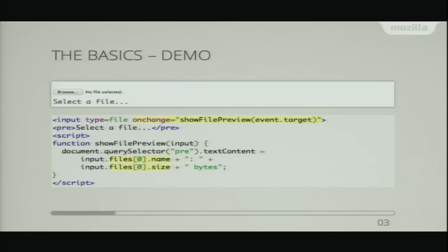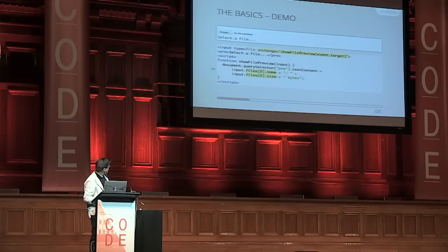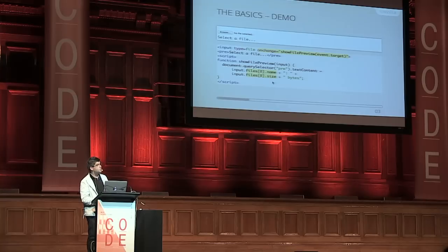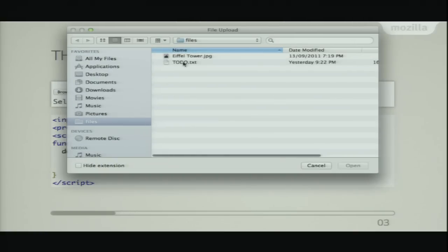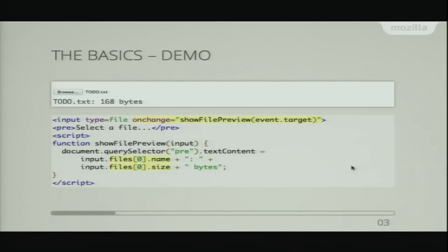Here's a little demo. We have an input element at the top with an onchange event listener attribute that calls a function showFilePreview. Inside there, we're just grabbing the first file from the list of files selected, getting the name and the size of that file, and displaying them on the web page. In the pre-element just below the input, it's showing us the file name and the file size. Pretty easy so far.